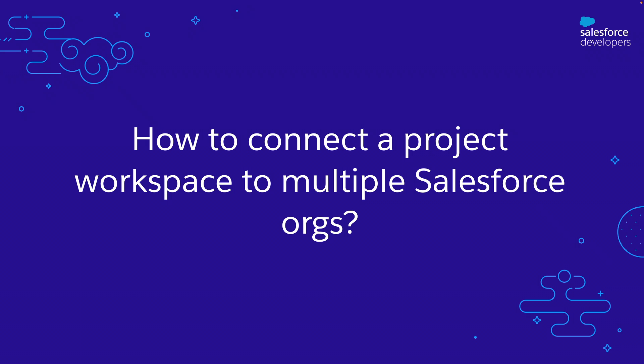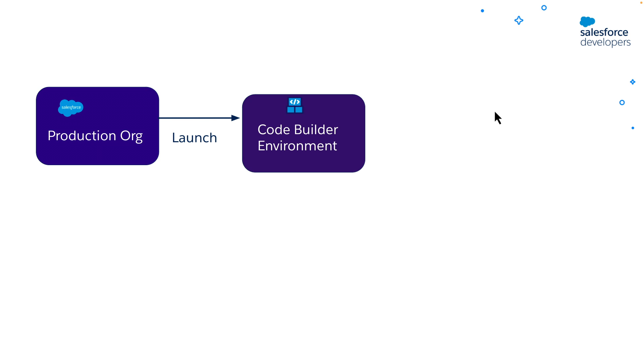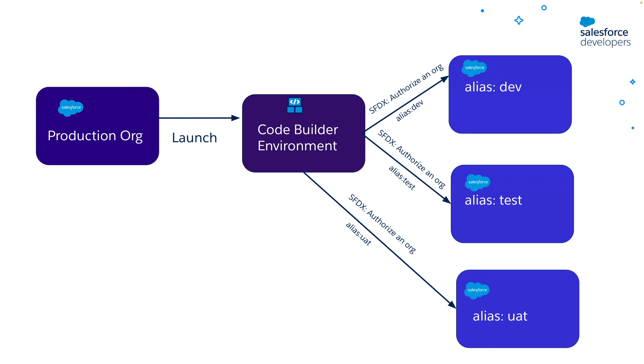Next, let me show you how a single project workspace can link to multiple orgs. As we covered in the previous video, you can authorize a project workspace to a Salesforce org using the SFDX authorize an org command. You can authorize multiple orgs by using the same command, but you'll have to do it multiple times with all of the orgs that you want to connect with. Code Builder persistently stores all of the connections for you.